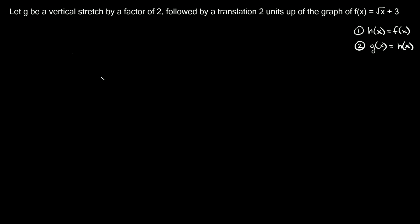What's up, you freaking geniuses? In this video I'm going to teach you how to write a rule for g of x by transforming f of x, and we're specifically going to be covering radical functions. You can always break these types of problems into two steps. The first step is just writing your first transformation as h of x is equal to f of x transformed.